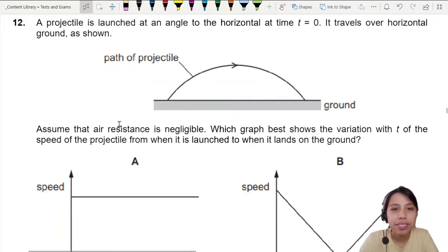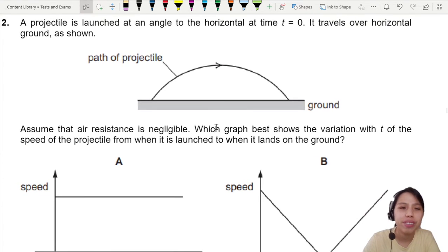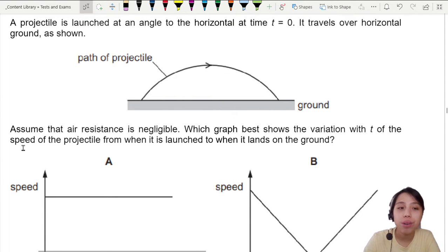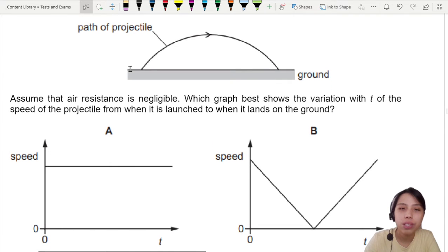A projectile is launched at an angle and it takes this path and travels over horizontal ground. Assume air resistance is negligible so we don't need to worry about the drag force. Which graph best shows the variation of speed throughout the entire journey from when it's launched to when it lands?